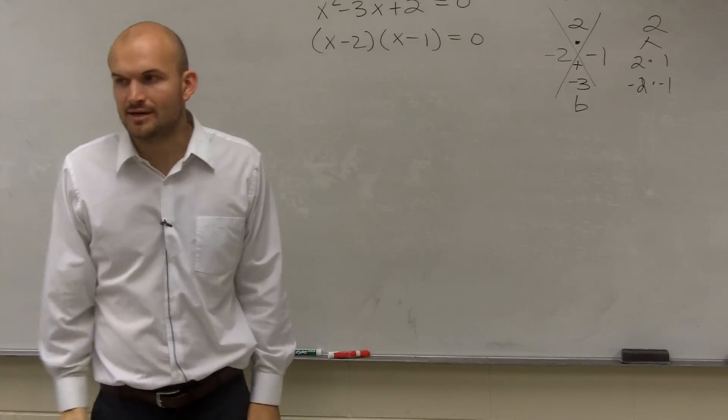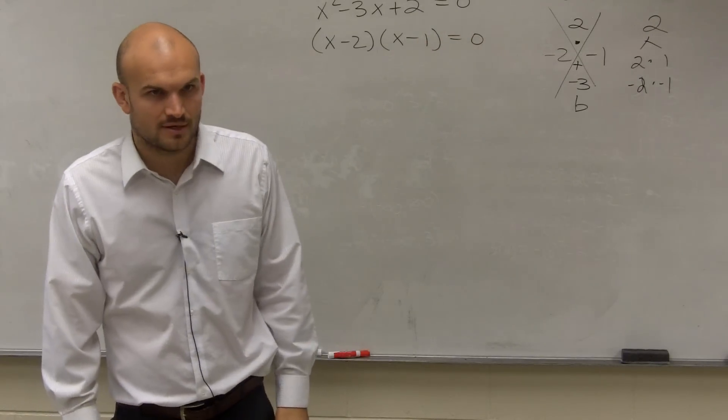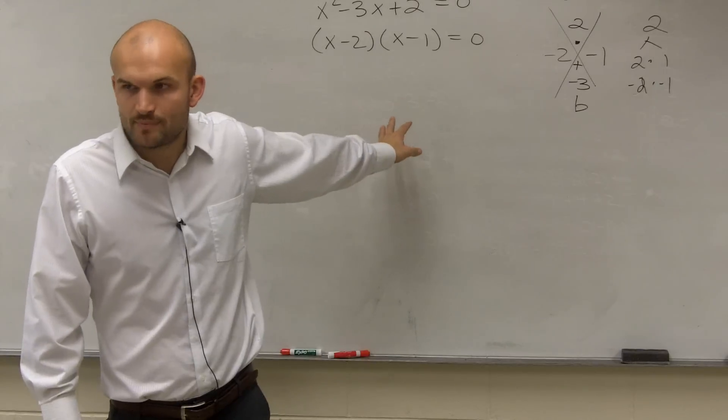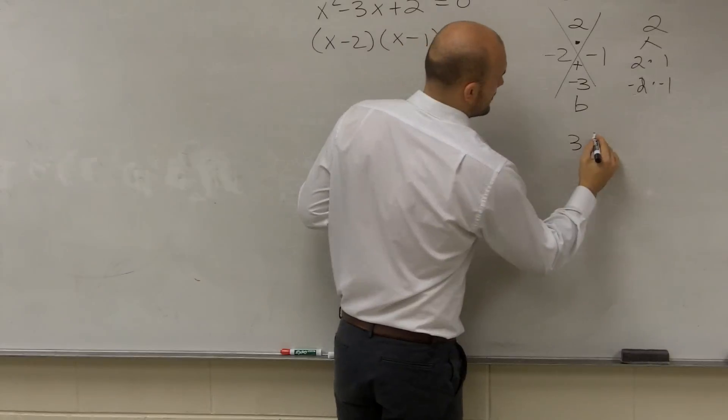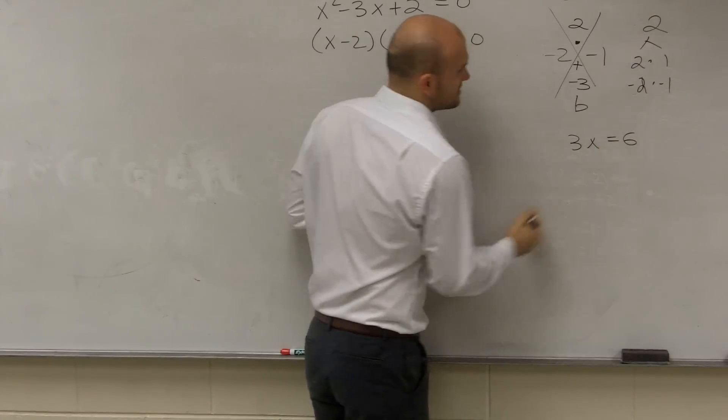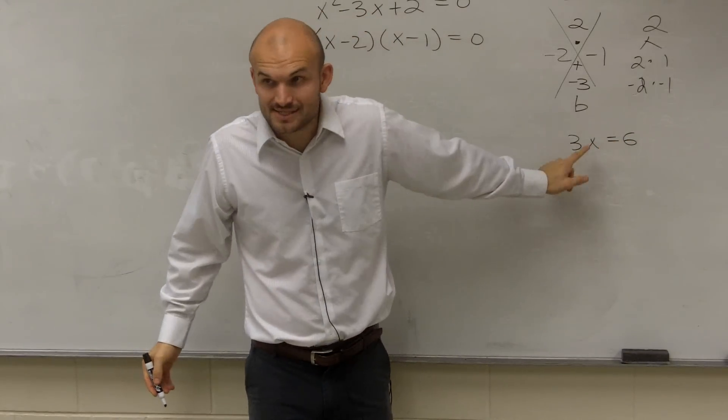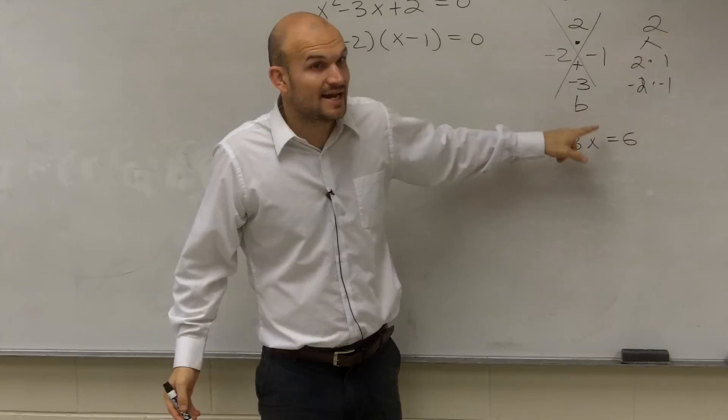Now, why do we write them as a product of two factors? The reason why you guys want to solve it by this way is because we can't solve it like this. You can't say 3x equals 6. What do you do there? You get x by itself, right? That was easy to get x by itself.